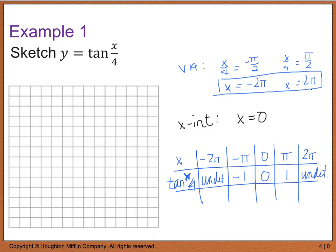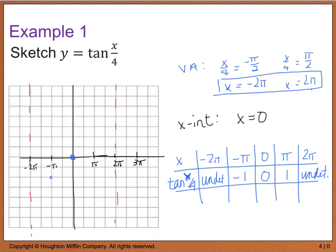Plotting this: vertical asymptotes at positive 2pi and negative 2pi. An x-intercept at (0, 0). At negative pi, the point is (−pi, −1), and at positive pi, the point is (pi, 1). Connecting these gives a graph with that characteristic tangent S-shape.